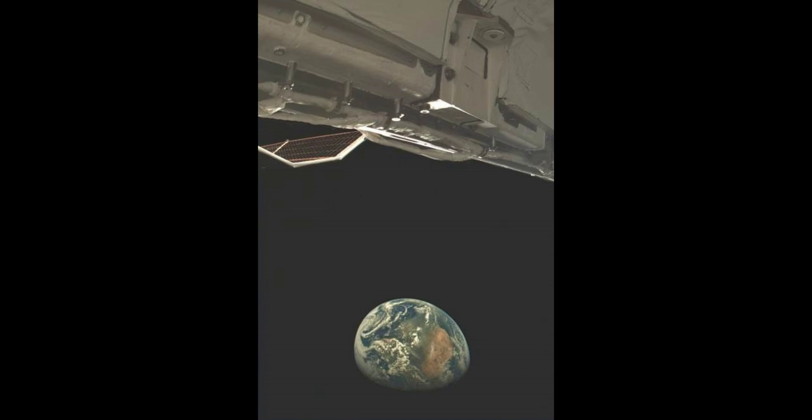Posted to the Defense Visual Information Distribution Service, the photo caption says the image was taken from an X-37B onboard camera used to ensure the health and safety of the vehicle. It captures an image of Earth while conducting experiments in a highly elliptical orbit in 2024.